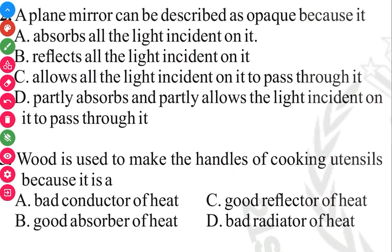Question number 3. Wood is used to make the handles of cooking utensils because it is a bad conductor of heat. The answer in 3, 2, 1 is that it's a bad conductor of heat. Since it's a bad conductor of heat, you can hold the handle without getting burnt.